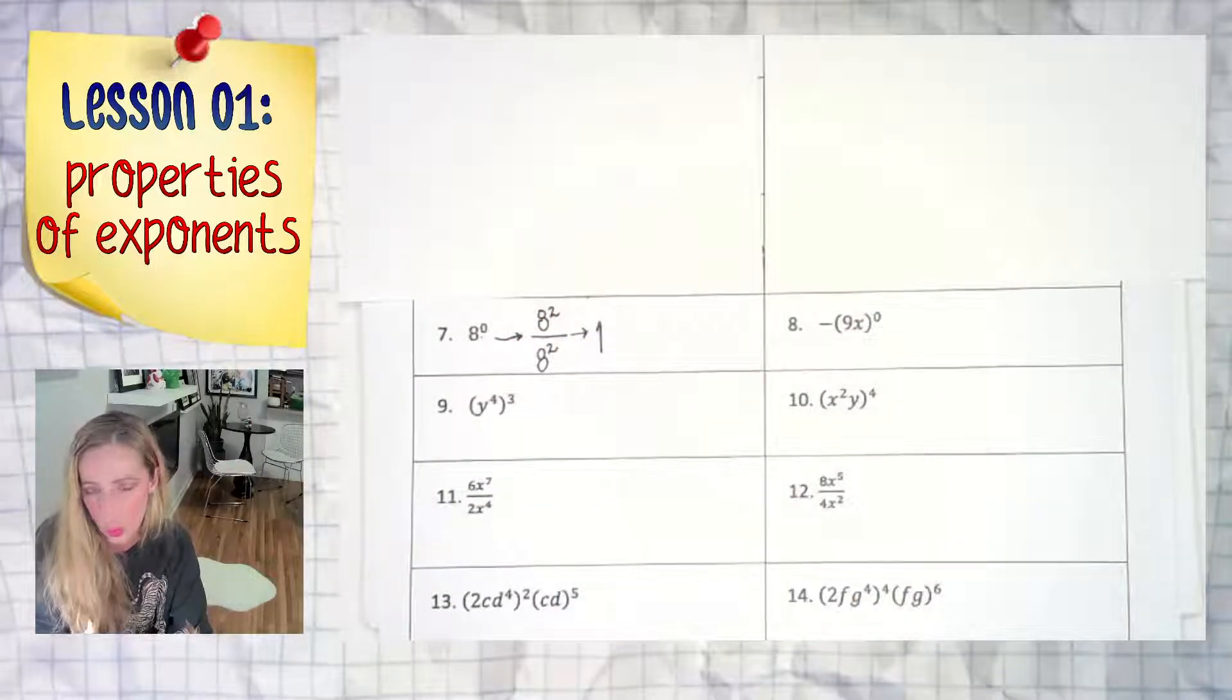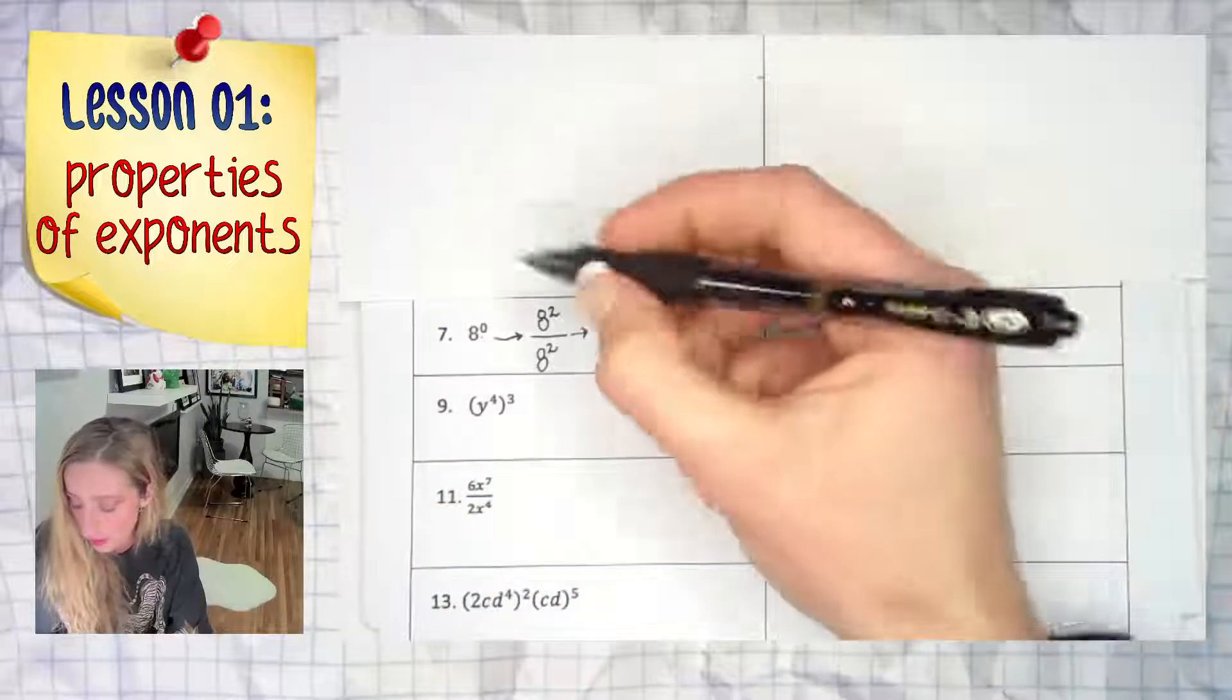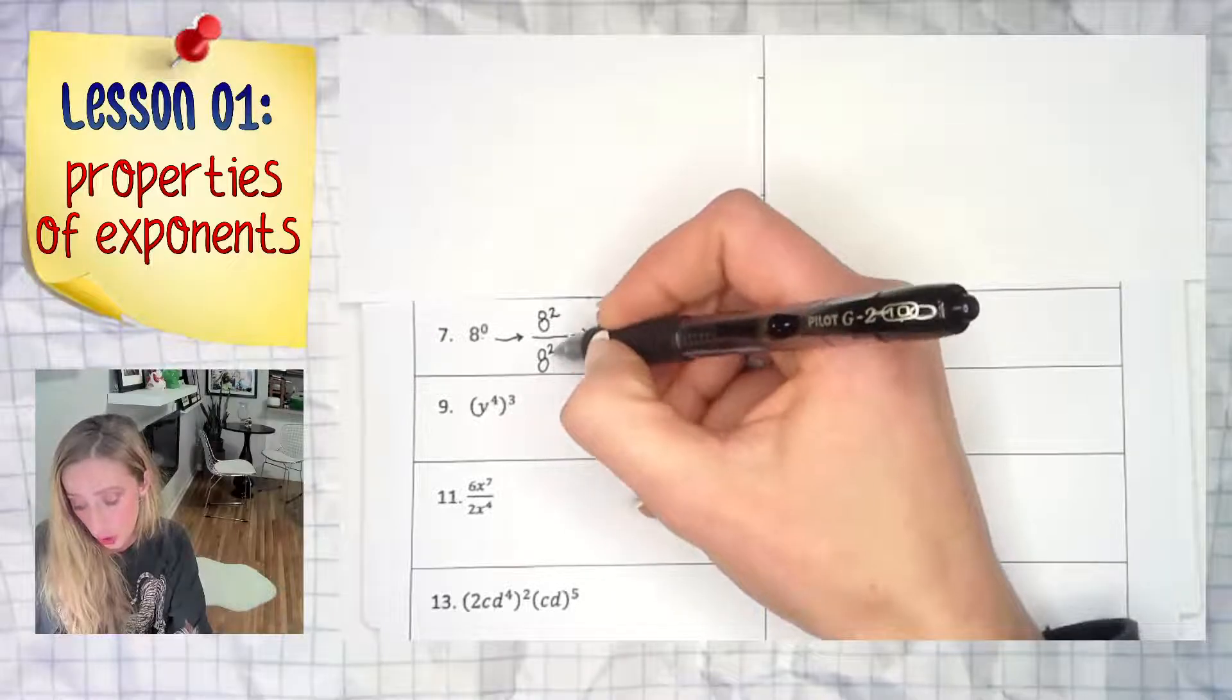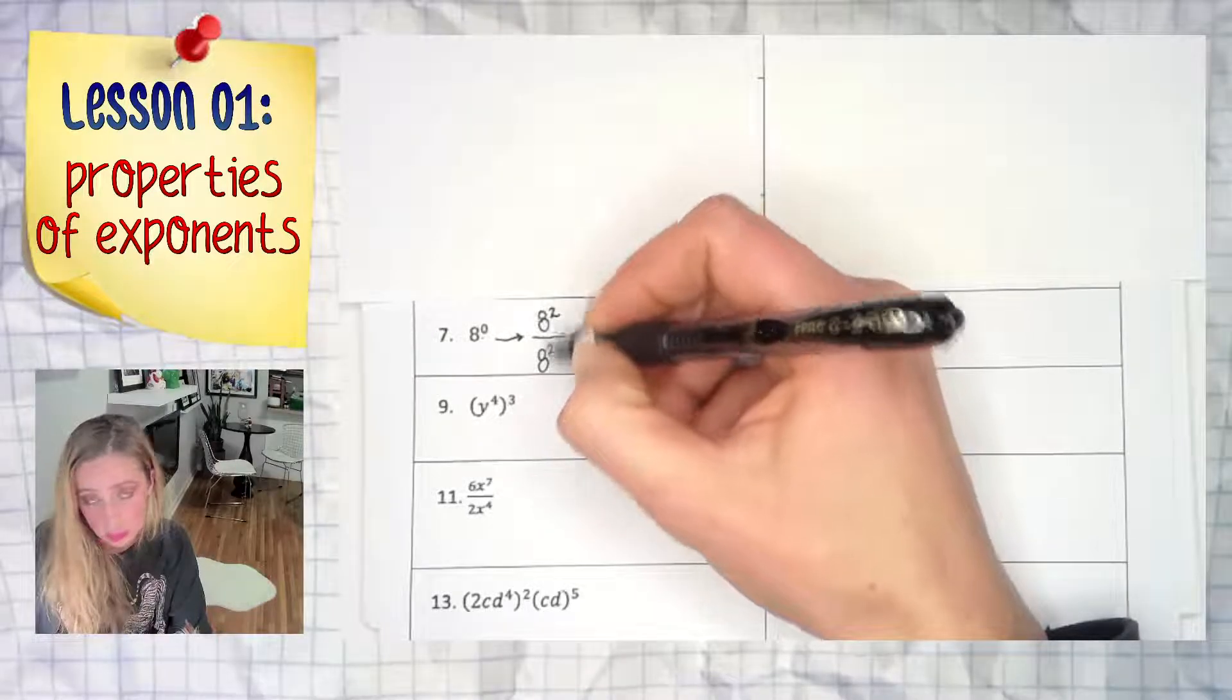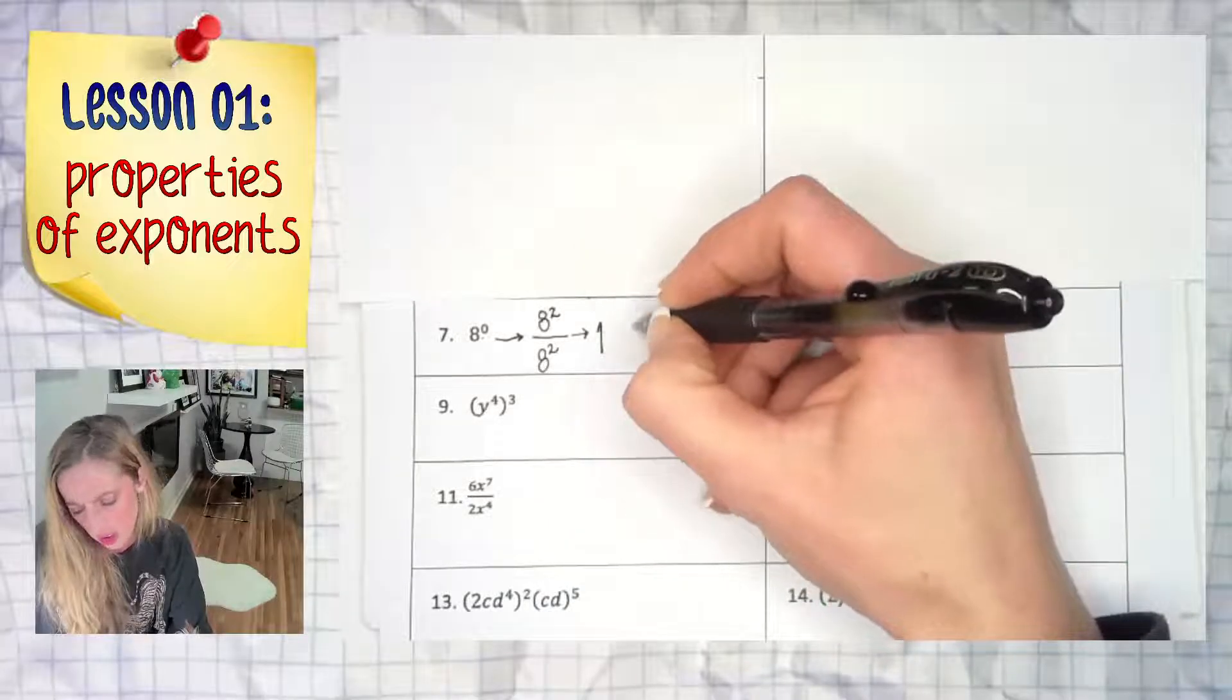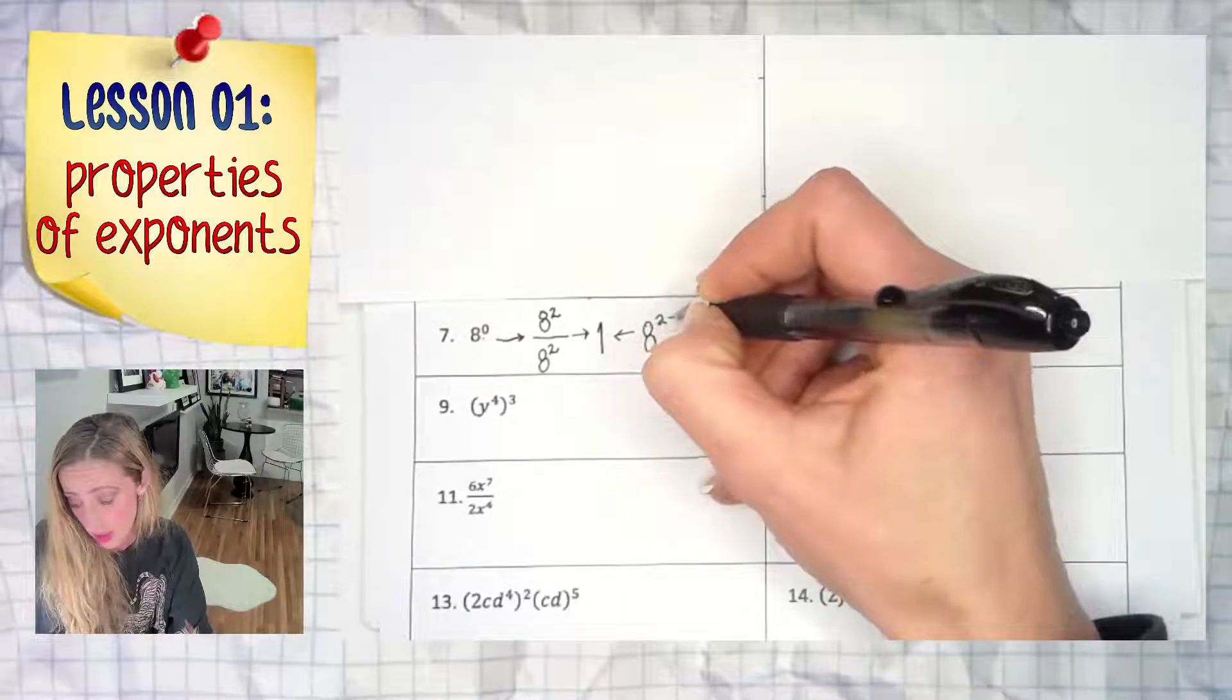What does this have to do with anything? Well, the other rule is when you're dividing or have a fraction, the rule for your exponents of like bases is to subtract your exponents. So if we looked at it that way, that would be 8 to the 2 minus 2.